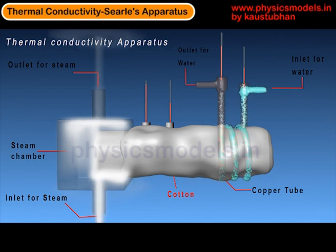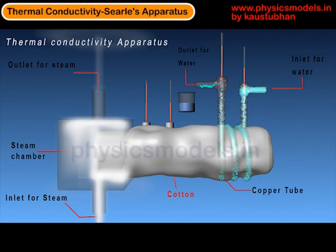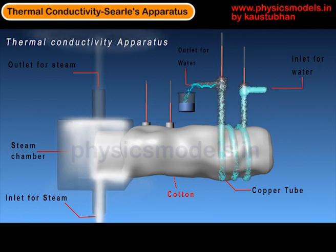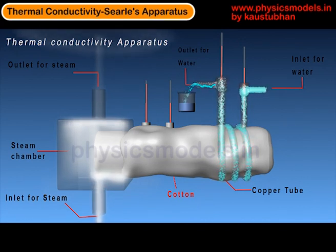The water flow is important, and when the water flows out through the outlet, it has to be collected in a beaker. The mass of water is very important, because it's the mass of water which is absorbing the heat from the material.